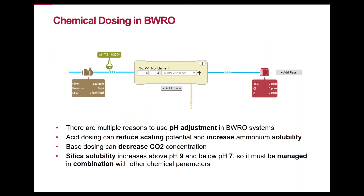Chemical dosing in brackish water RO serves multiple functions. Acid dosing can increase the solubility of ammonium for removal and keep scale-forming salts from precipitating onto the membrane surface. Base dosing converts carbon dioxide into other forms of alkalinity, which can be removed by the RO membrane to increase overall conductivity removal. In more specialized systems, pH can be controlled above 9 and below 7 to increase silica solubility. These techniques are typically used in combination with a specialized scale inhibitor in systems where there is a scale-forming tendency.